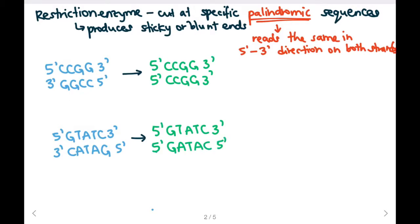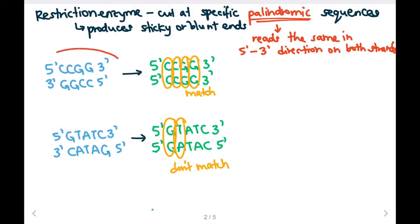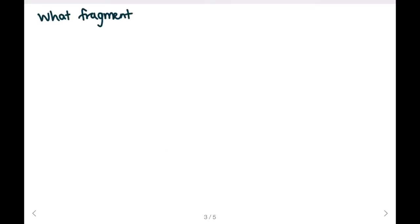If we ask which sequence would be cut by a restriction enzyme: looking at the first one, every single nucleotide matches in the 5' to 3' direction. But in the second strand, G and G match, but T and A don't match. As a result, the first sequence would most likely be cut by a restriction enzyme because it's palindromic — it reads the same in the 5' to 3' direction.